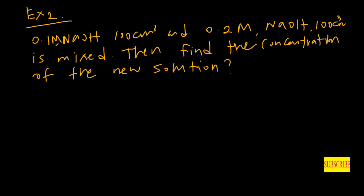Now consider our second example. A 0.1 M NaOH solution of 100 cubic centimeters and a 0.2 M NaOH solution of 100 cubic centimeters are mixed. We need to find out the concentration of the new solution. First we draw the structure of this experiment. The first solution contains 0.1 M NaOH with a volume of 100 cubic centimeters.